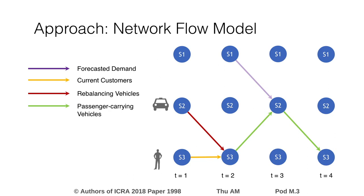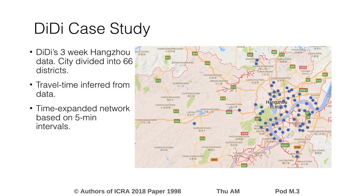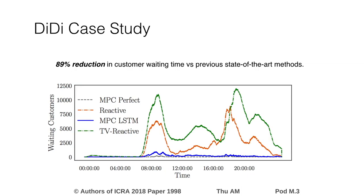To validate this approach, we tested this algorithm on a simulation based on three weeks of DiDi travel data in the city of Hangzhou and compared it to a previous state-of-the-art algorithm. The results are promising. The proposed algorithm reduces the average waiting time by 89% compared to the state-of-the-art. This improvement can be seen in the graph showing the number of waiting customers throughout the day — the proposed approach is in blue and the prior art, here called reactive, is in orange.